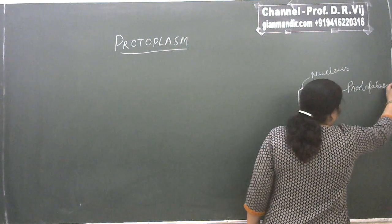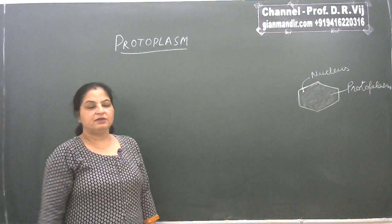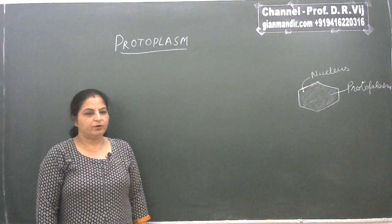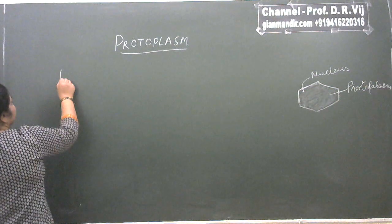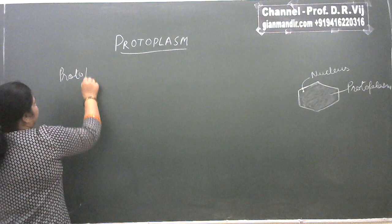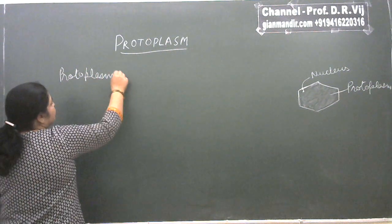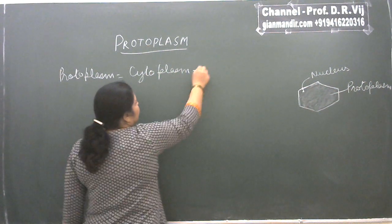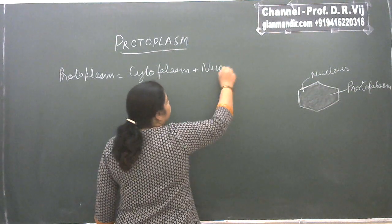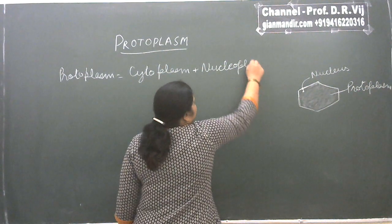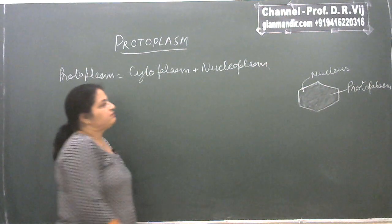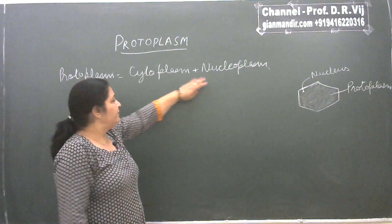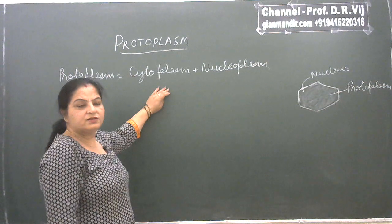What is protoplasm? The jelly-like viscous material inside the cell membrane — any living component inside the cell membrane — is known as protoplasm. Protoplasm is basically the combination of two things: cytoplasm and nucleus, or nucleoplasm. The nucleoplasm is the jelly-like material present inside the nucleus. Anything between the nuclear membrane and the cell membrane is known as cytoplasm.